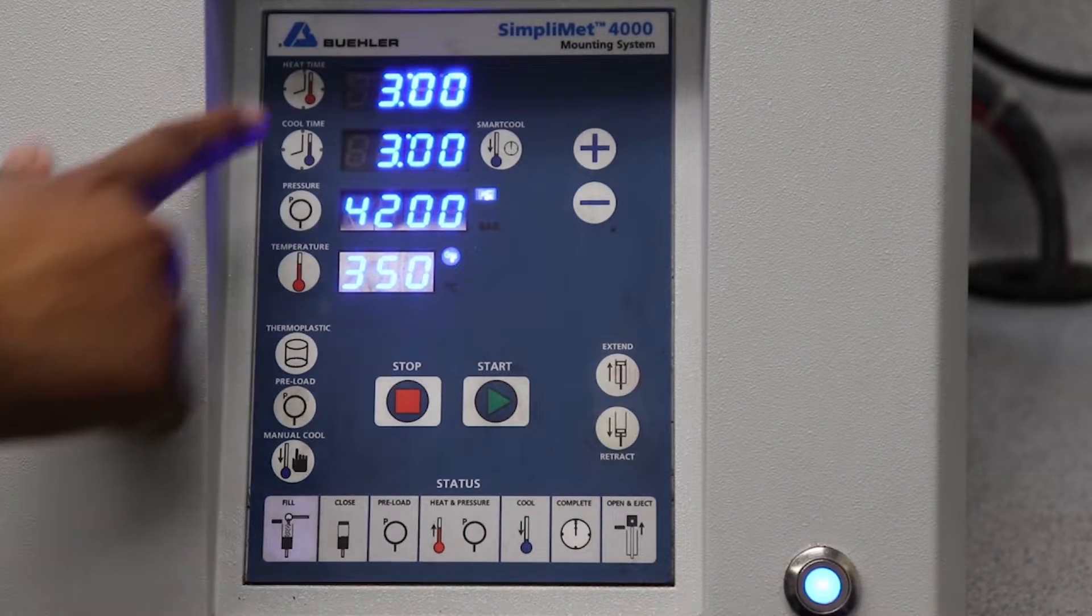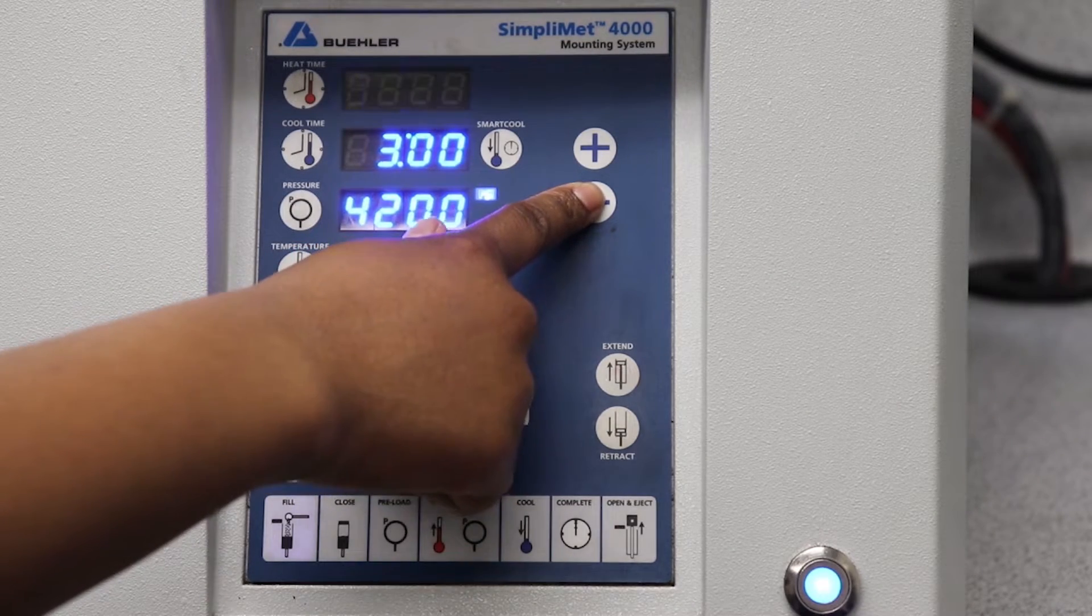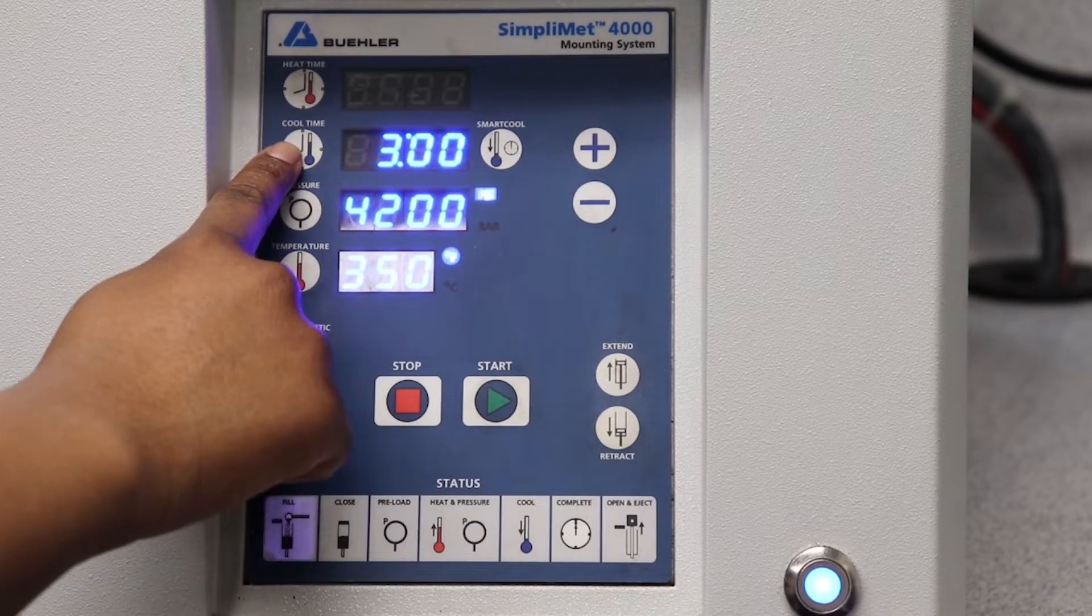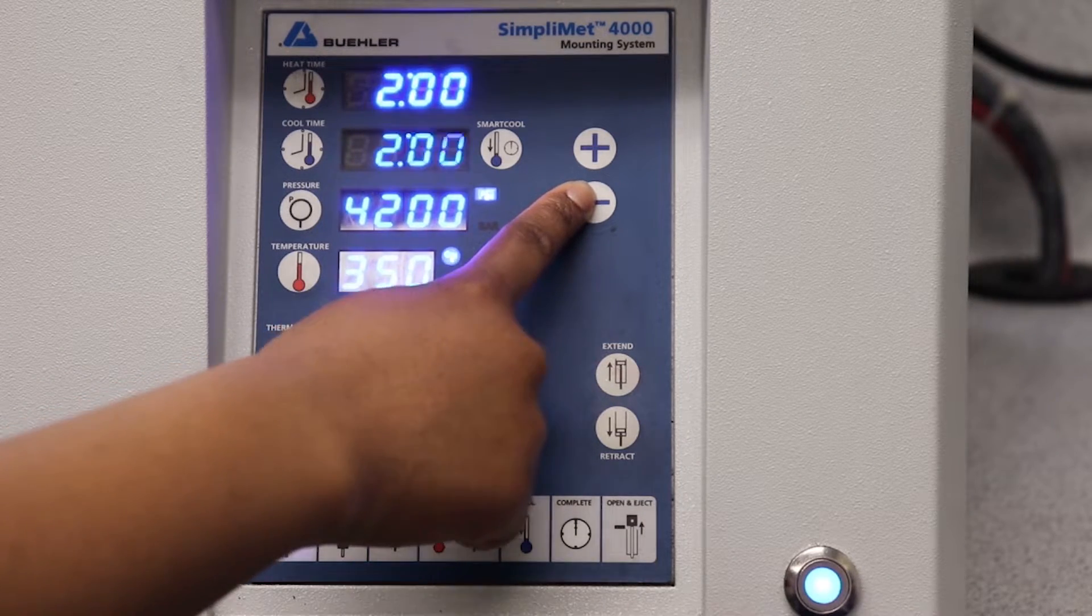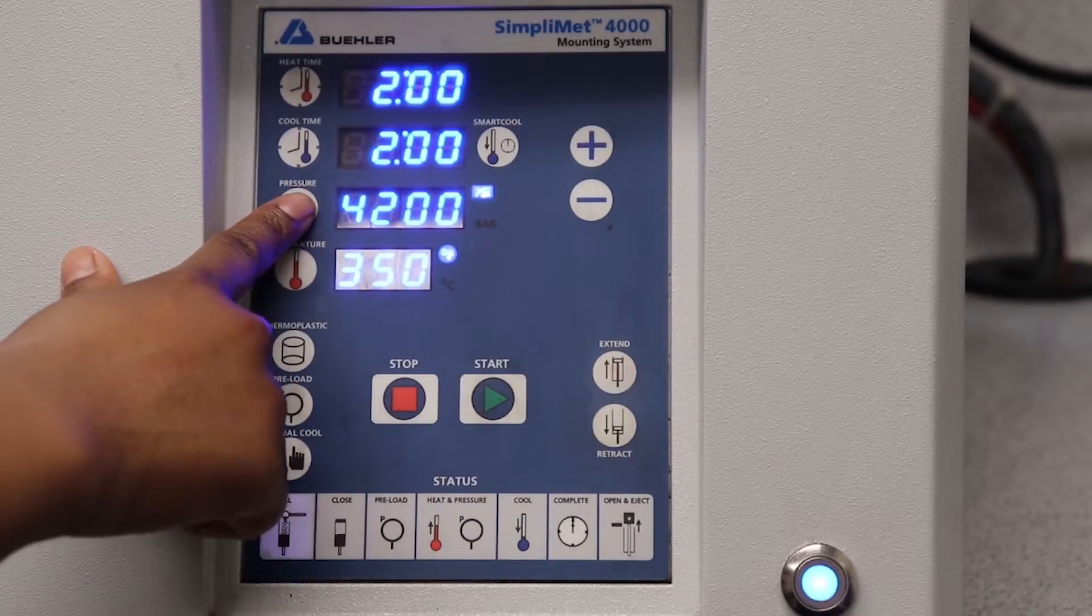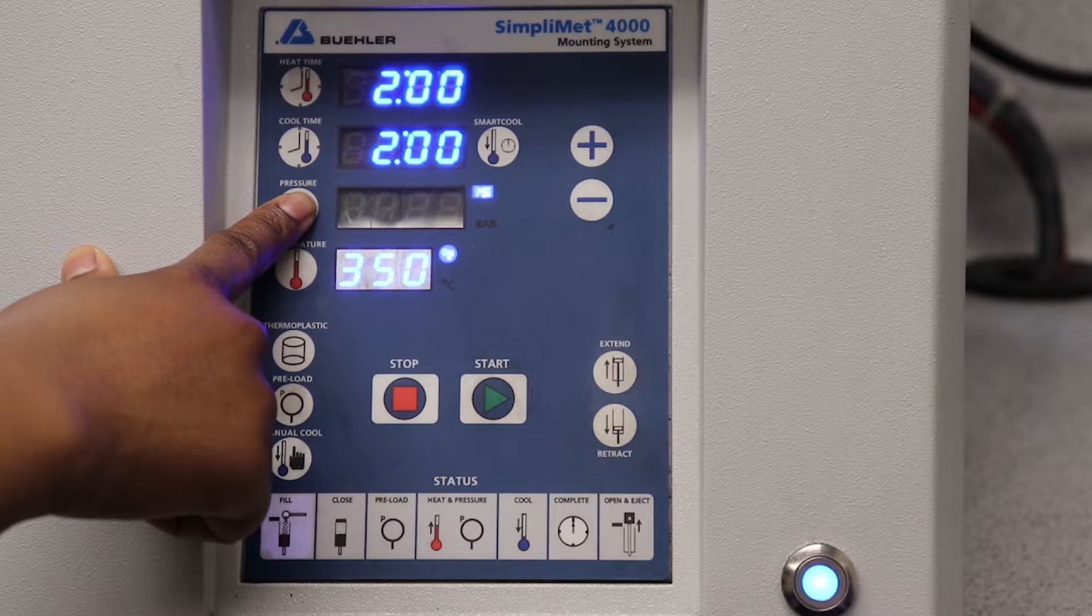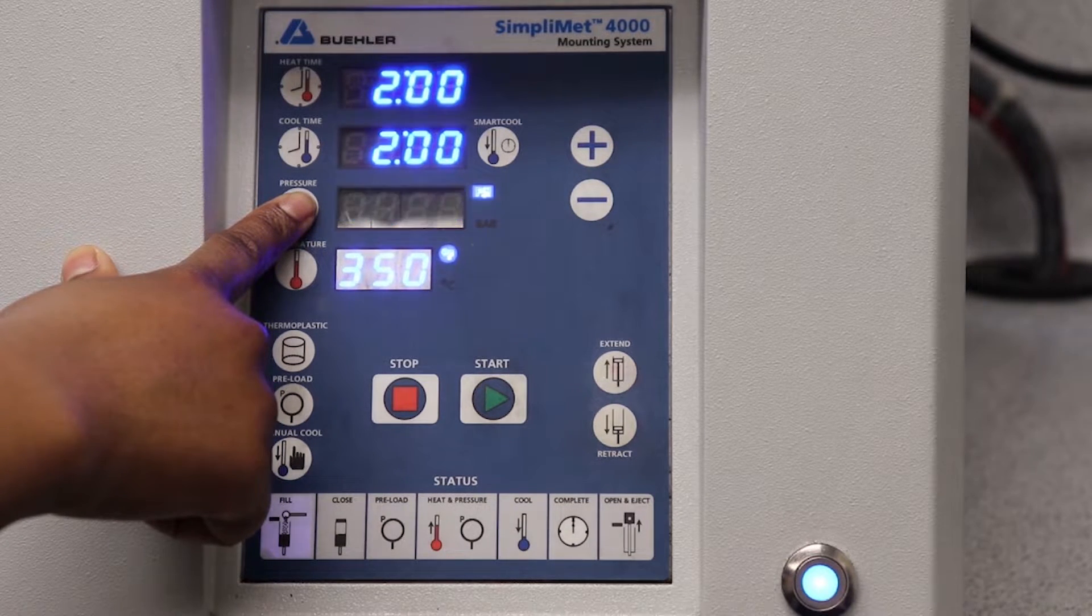Next, change the setting to the appropriate values for the media and mount size being used. This can be done by pressing the icons to the left of the values and then pressing the plus and minus buttons to adjust the values accordingly. The pressure and temperature units can be switched by pressing and holding the button to the left hand side of the number display.